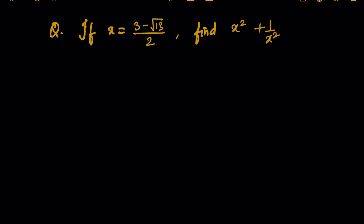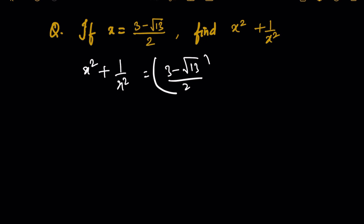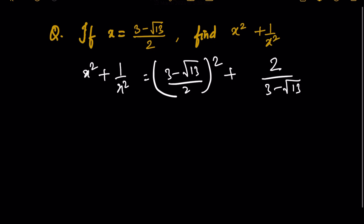In such type of questions, if we try to go with the straightforward approach — directly computing x squared plus 1 by x squared using x = (3 minus root 13)/2 squared plus 2 divided by (3 minus root 13) squared — this is going to take a lot of time. So we can use a smarter approach.